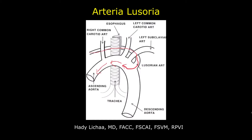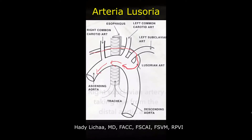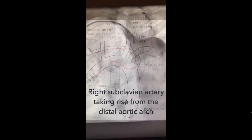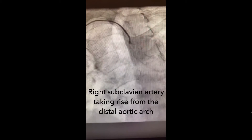This is Hali Leesha describing technical tips on how to overcome arterial lusoria during a cardiac catheterization from a right radial approach. Arterial lusoria is the most common congenital anomaly of the aortic arch, occurring in 1% of cases, where the right subclavian artery takes rise from the distal aortic arch and courses behind the esophagus.